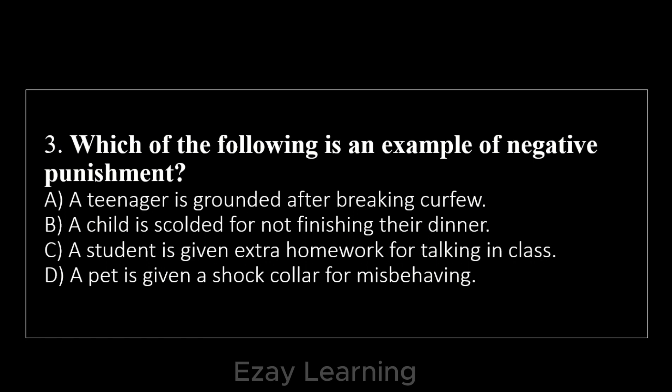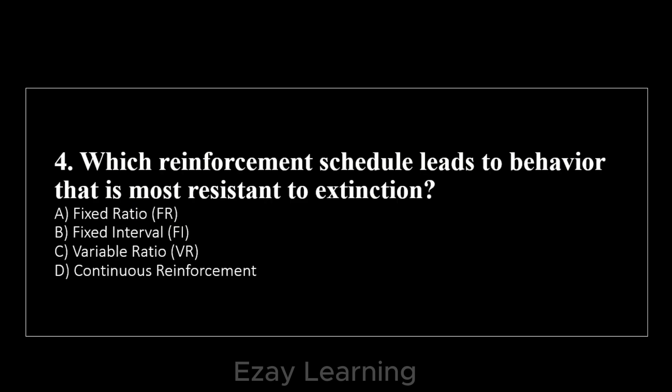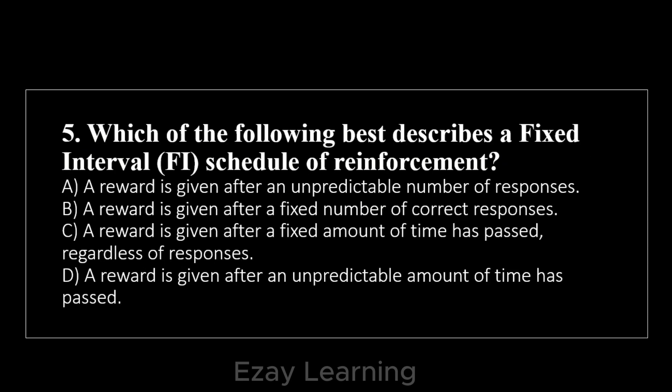MCQ: Which of the following is an example of negative punishment? Answer: A teenager is grounded after breaking a rule. Which reinforcement schedule leads to behavior most resistant to extinction? Answer: Variable ratio (VR). Which best describes a fixed interval (FI) schedule? Answer: A reward is given after a fixed amount of time has passed, regardless of responses.